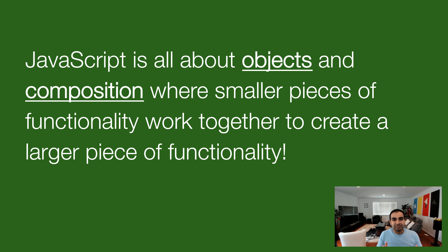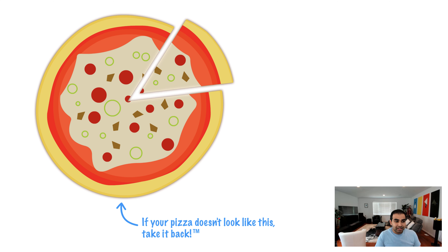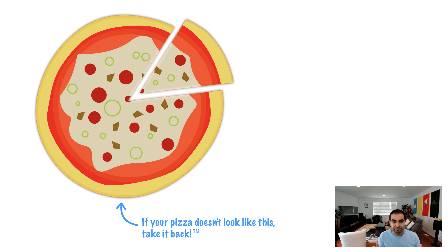Before we go too far, I just want to keep one thing in the back of your mind. JavaScript is all about objects and composition. Composition is really a way of saying that smaller pieces of functionality work together to create a larger piece of functionality. One of the best ways to illustrate this is by looking at pizza, because everyone loves pizza.